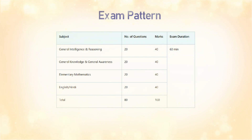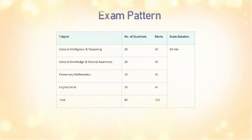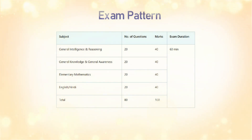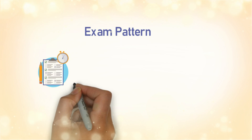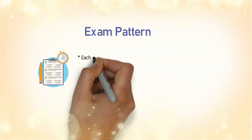The revised exam pattern for the SSC GD Constable computer-based exam is as follows: General Intelligence and Reasoning consists of 20 questions for 40 marks; General Knowledge and General Awareness consists of 20 questions for 40 marks; Elementary Mathematics consists of 20 questions for 40 marks; English or Hindi consists of 20 questions for 40 marks. The total number of questions is 80 for 160 marks. Duration of the examination is 60 minutes. Each question carries one mark, conducted in both English and Hindi. For every incorrect answer, there will be a negative marking of half a mark.